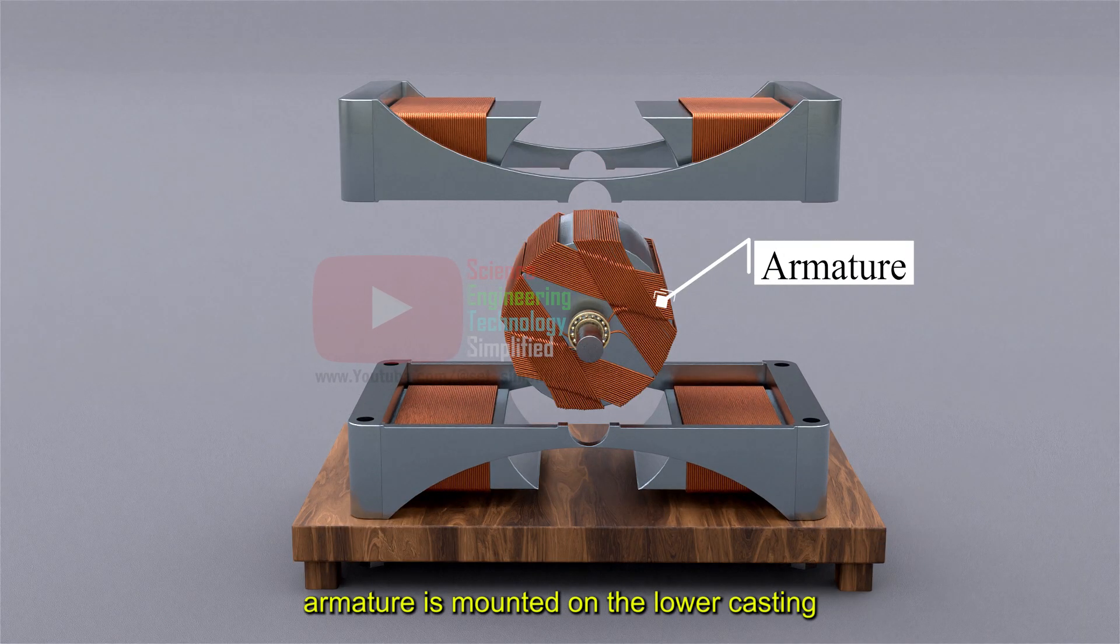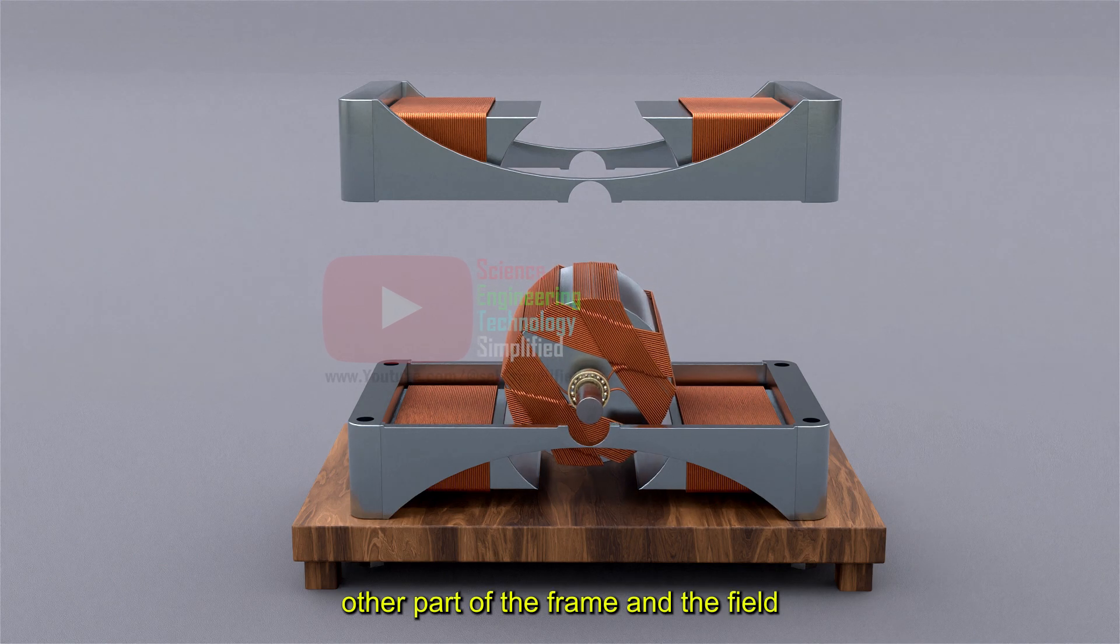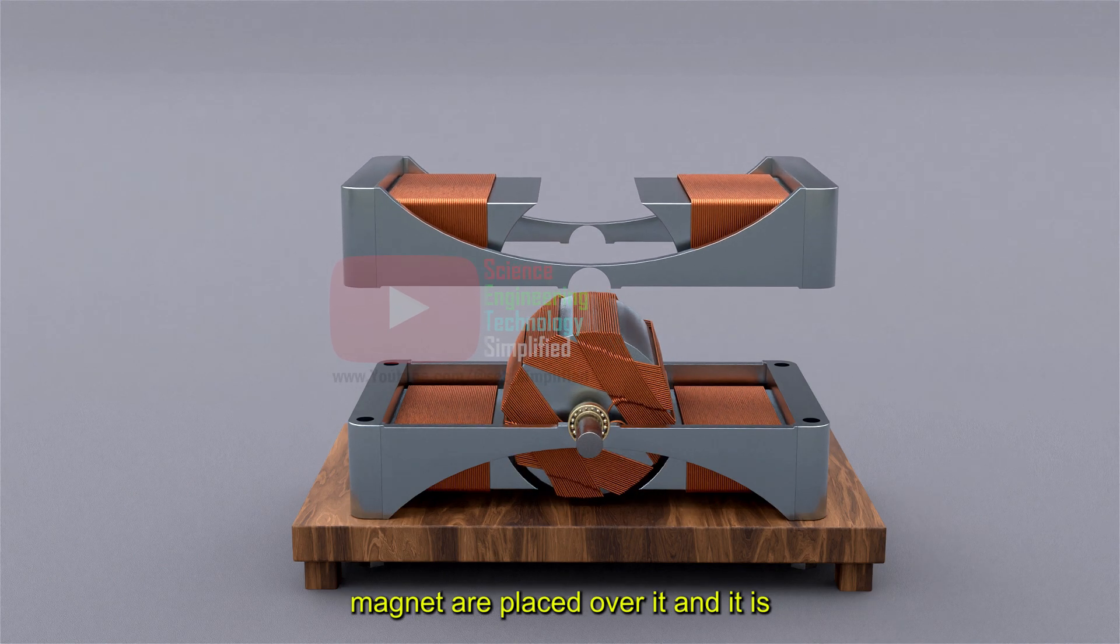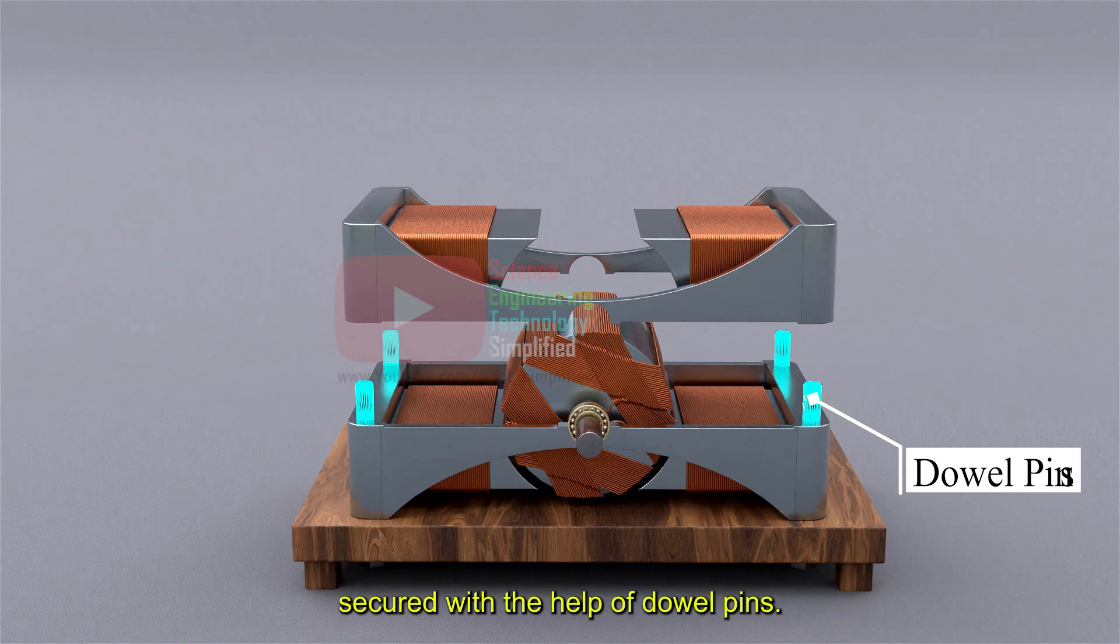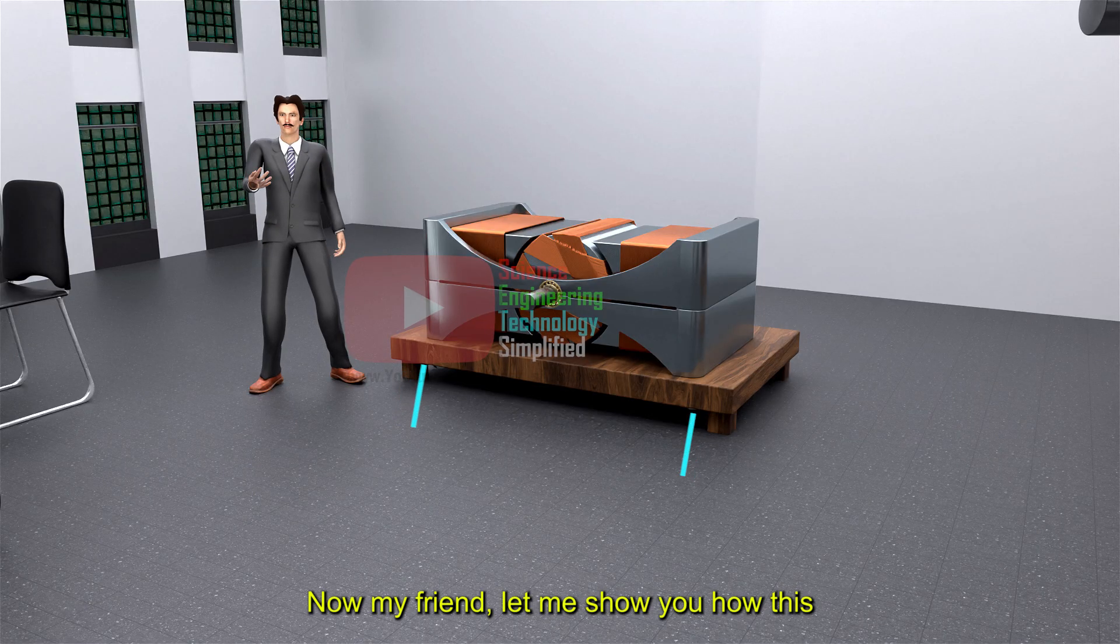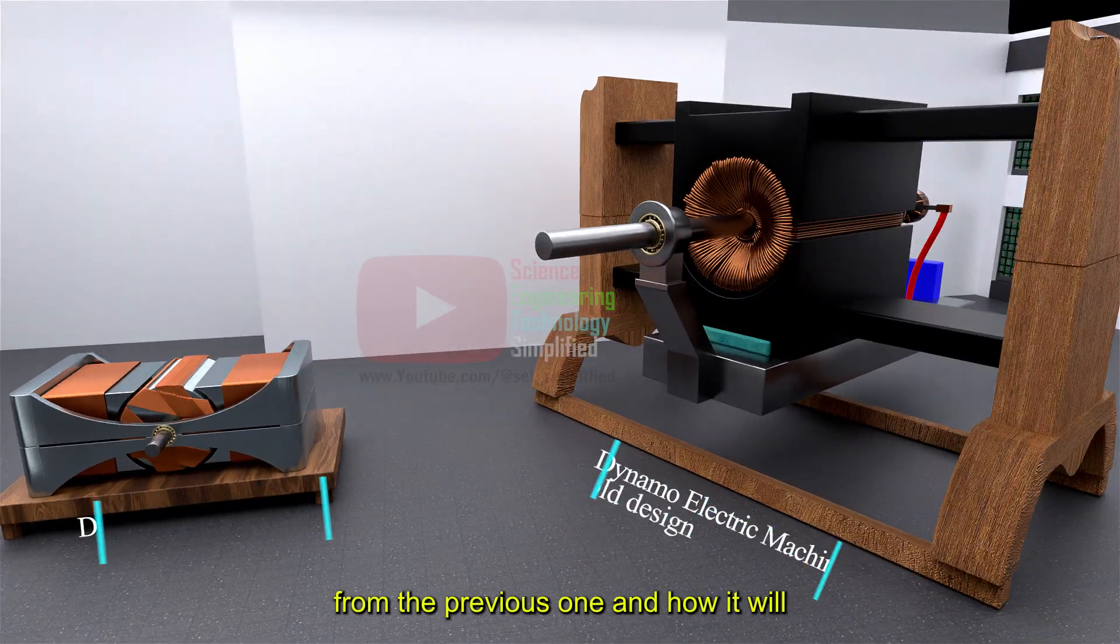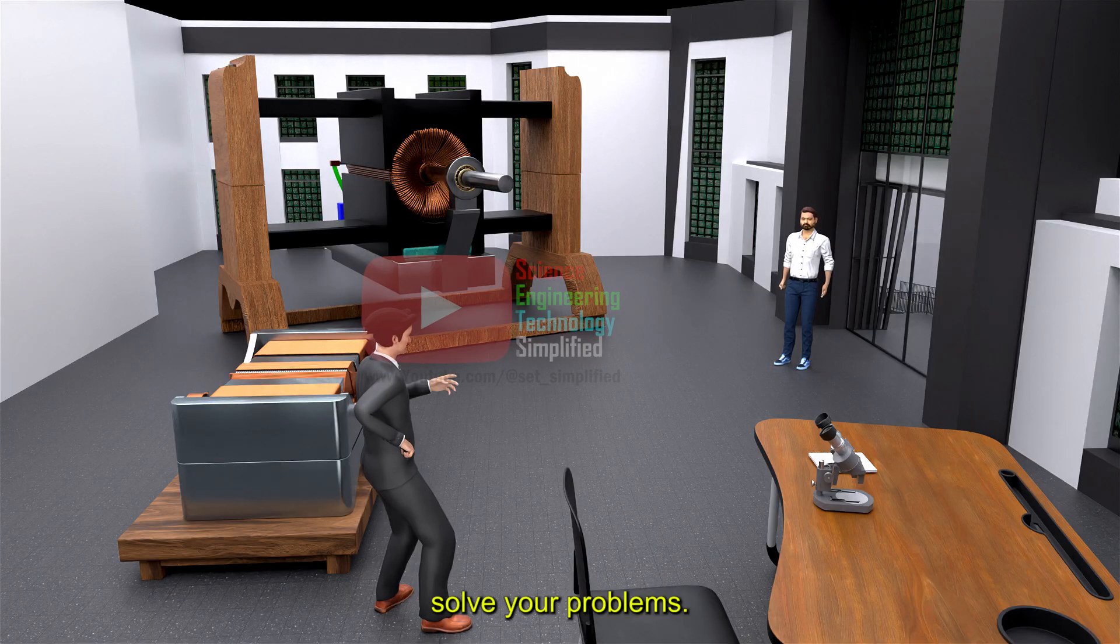Then the armature is mounted on the lower casting with the help of the shaft, and then the other part of the frame and the field magnet are placed over it and secured with the help of dowel pins. Now my friend, let me show you how this new dynamo electric machine is different from the previous one and how it will solve your problems.